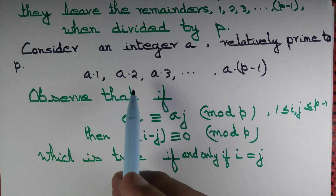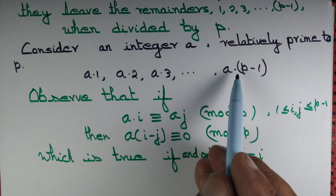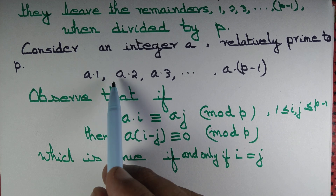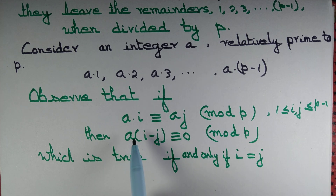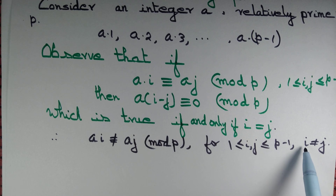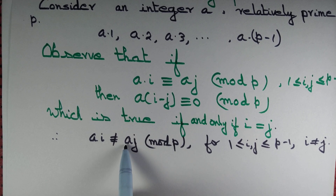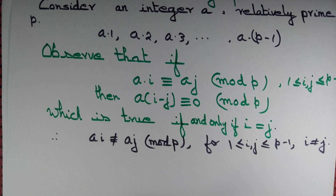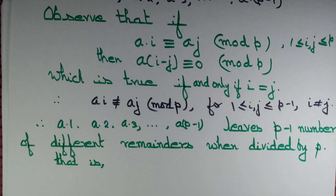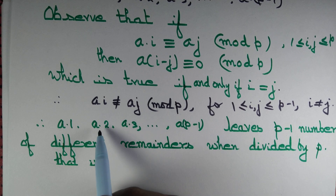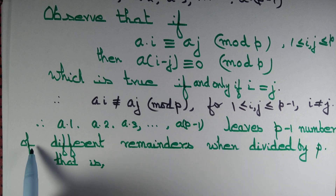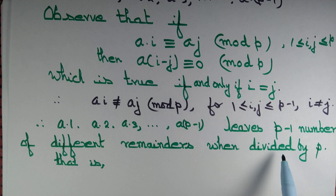So the integers a·1, a·2, a·3, ..., a·(p-1) all leave different remainders when divided by p, since they are not congruent to each other. If i is different from j, then a·i is not congruent to a·j, for i, j lying between 1 and p minus 1. So a·1, a·2, ..., a·(p-1) leave p minus 1 different remainders when divided by p.